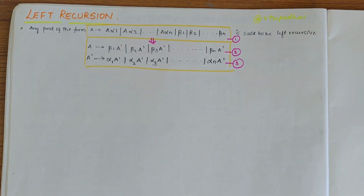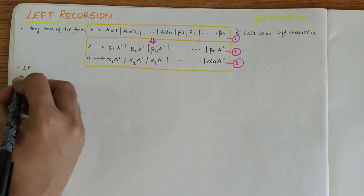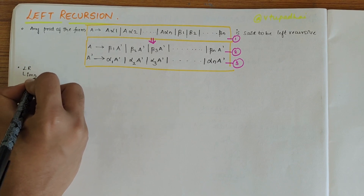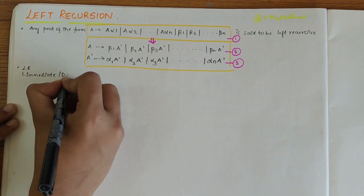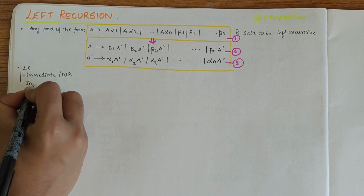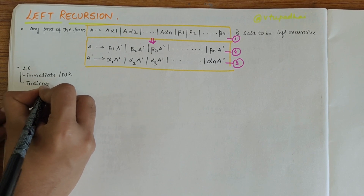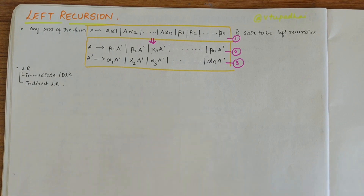Left recursion can be either immediate — also called direct left recursion — or it could be indirect left recursion. For any given grammar, even if one production is left recursive, then the entire grammar is said to be left recursive. Let's now consider a question.